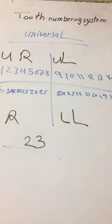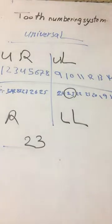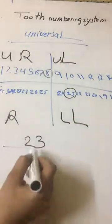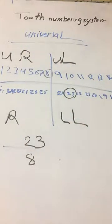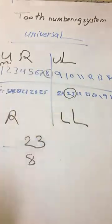For example, 23. It is lower left lateral incisor. Another number, eight, represents upper right central incisor. This is for permanent teeth.